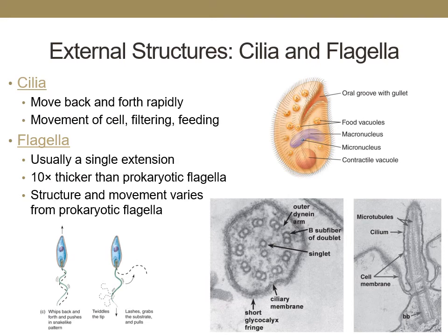Cilia and flagella are very different structures, but both allow cells to move. Cilia are usually found all around the perimeter of the cell surface. They move back and forth rapidly, allowing for backward and forward movement, and also play a role in bringing nutrients into the cell, especially in single-celled organisms. In eukaryotes, flagella are usually a single extension and are also 10 times thicker than prokaryotic flagella. The structure and manner in which the eukaryotic flagella moves is also very different. The internal structure of the flagella and cilia are composed of microtubules, and microscopy images show the arrangement of those microtubules within the cilia.